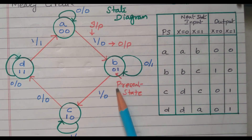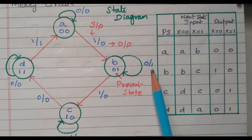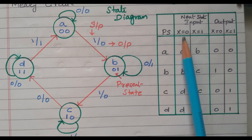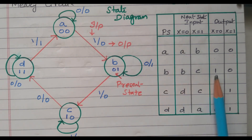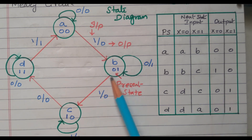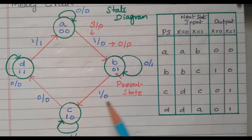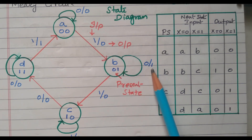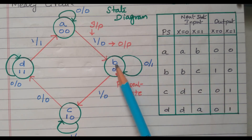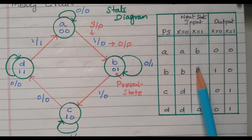For state B: when x equals 0, B goes to B itself and the output is 1. When x equals 1, B goes to C and the output is 0. So B to B when x equals 0 with output 1; B to C when x equals 1 with output 0.